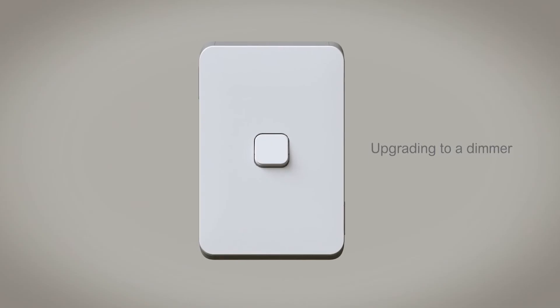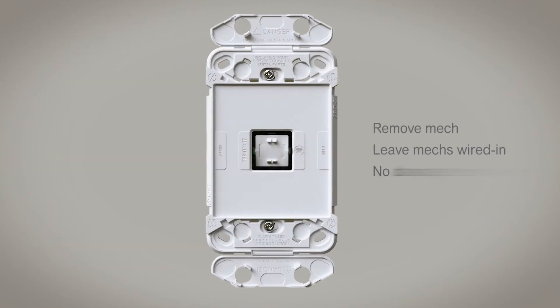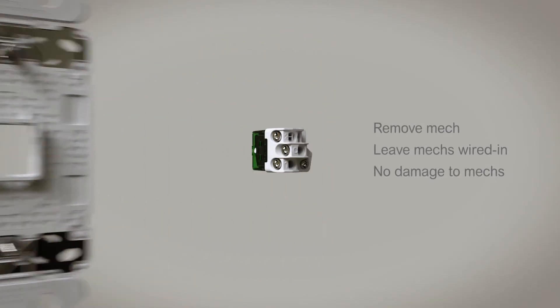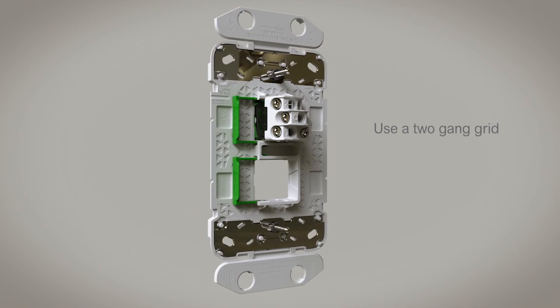And if your customer wants a dimmer added, remove the one-gang grid, unlock the mech, leaving it wired in, and use a two-gang grid.